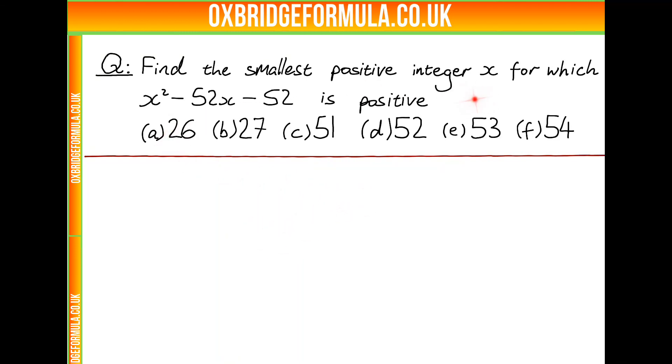Okay, let's begin by writing down the mathematical statement x squared minus 52x minus 52 is positive. And now we want to find the smallest positive integer x which satisfies this.